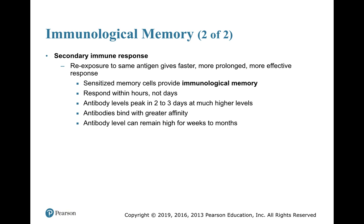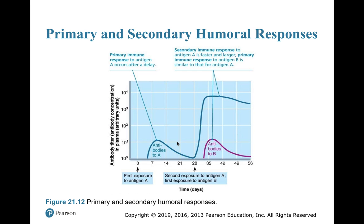Antibodies produced in the secondary response have also been modified and mutated so that they have even better affinity — a better ability to bind to their antigen. Those antibody levels will remain high for weeks to months upon second exposure. So if you immunize someone on day zero, after three to six days you'll get a peak — that's your primary immune response, usually an IgM response. That will wane as time goes on. But the next time you get exposed to that antigen, it'll very quickly rise to a much higher amount. The types of antibodies will be IgG and IgA, and they will bind better. But that is only for that specific antigen — if you get exposure to a different antigen, you have to do the whole process over again for that antigen.